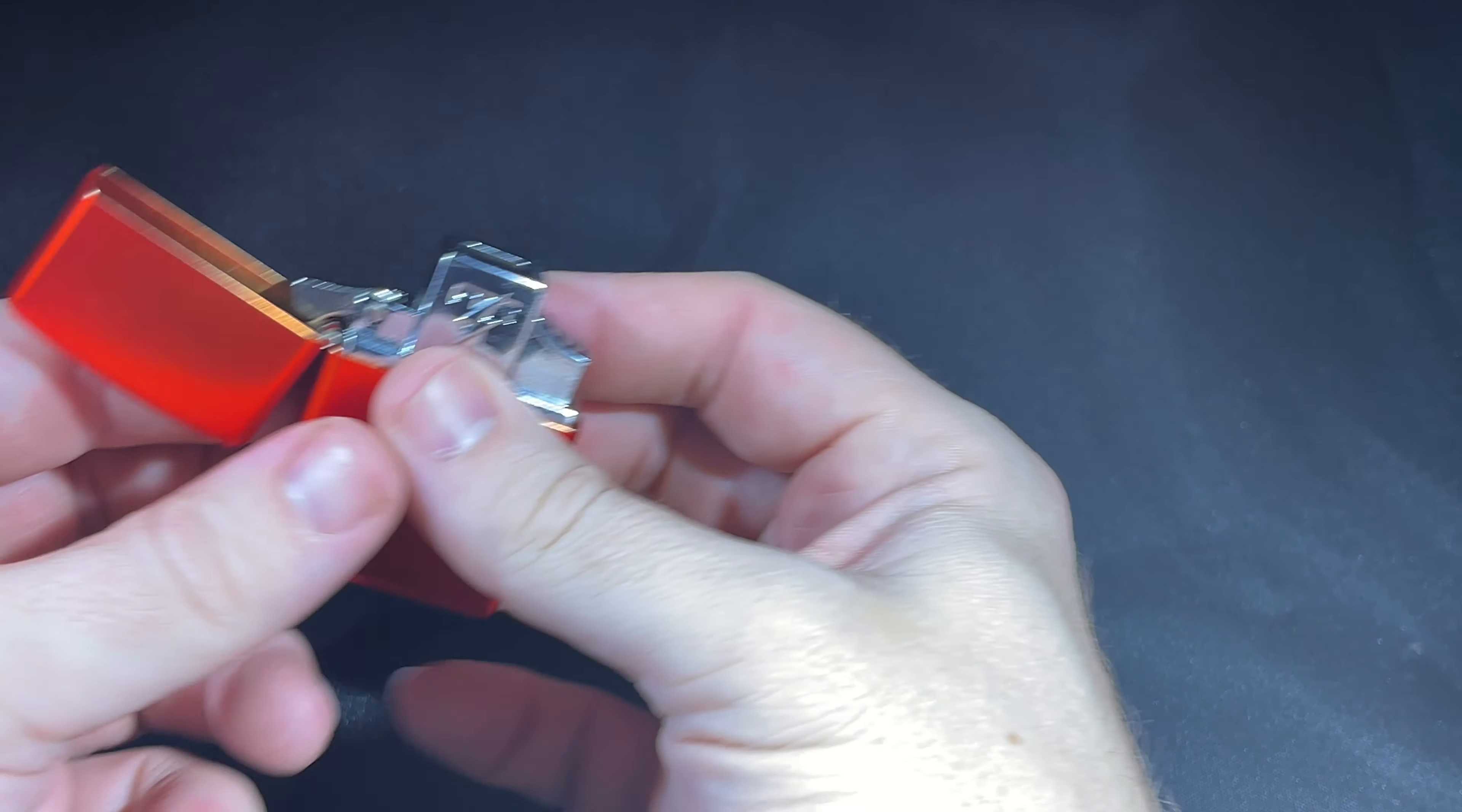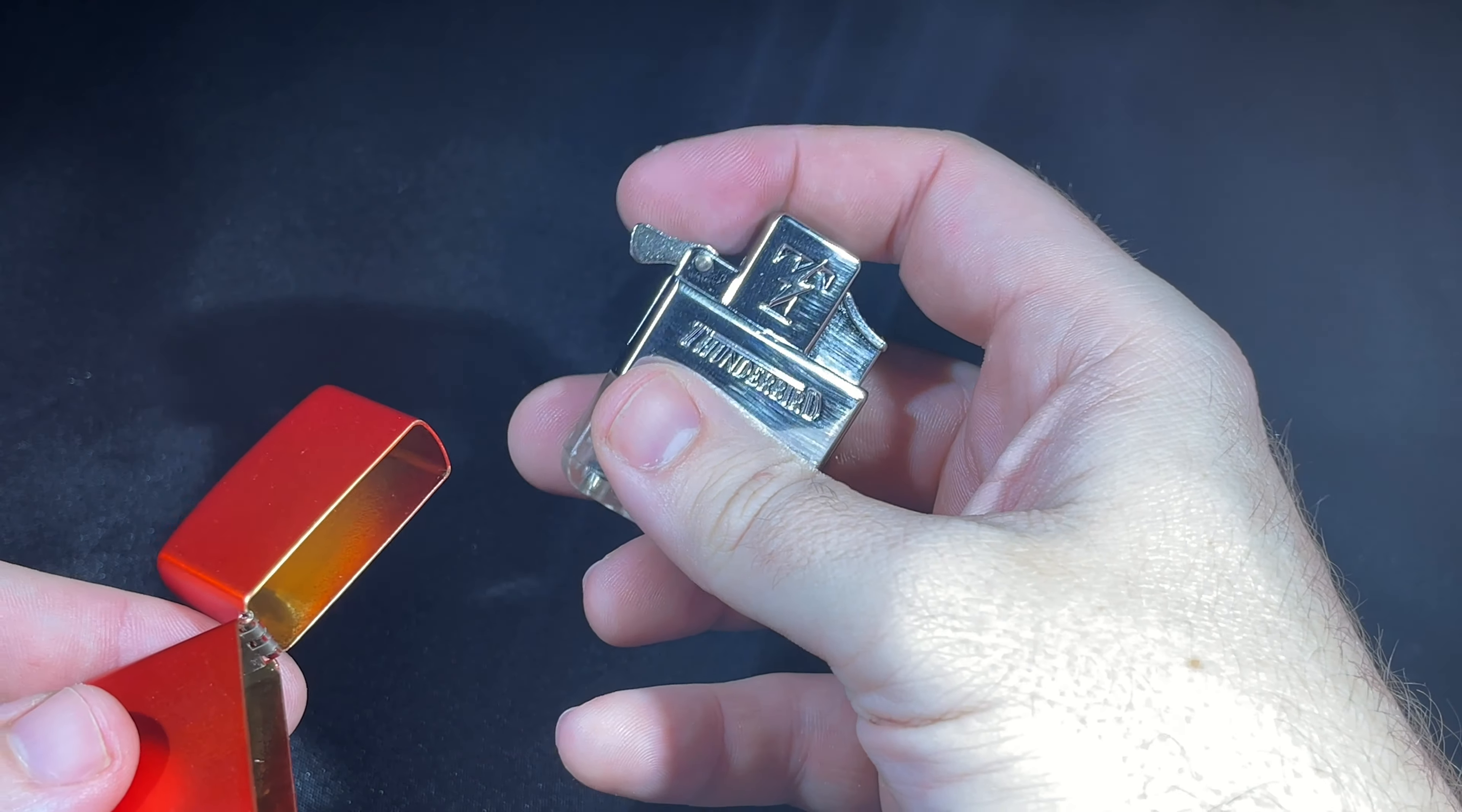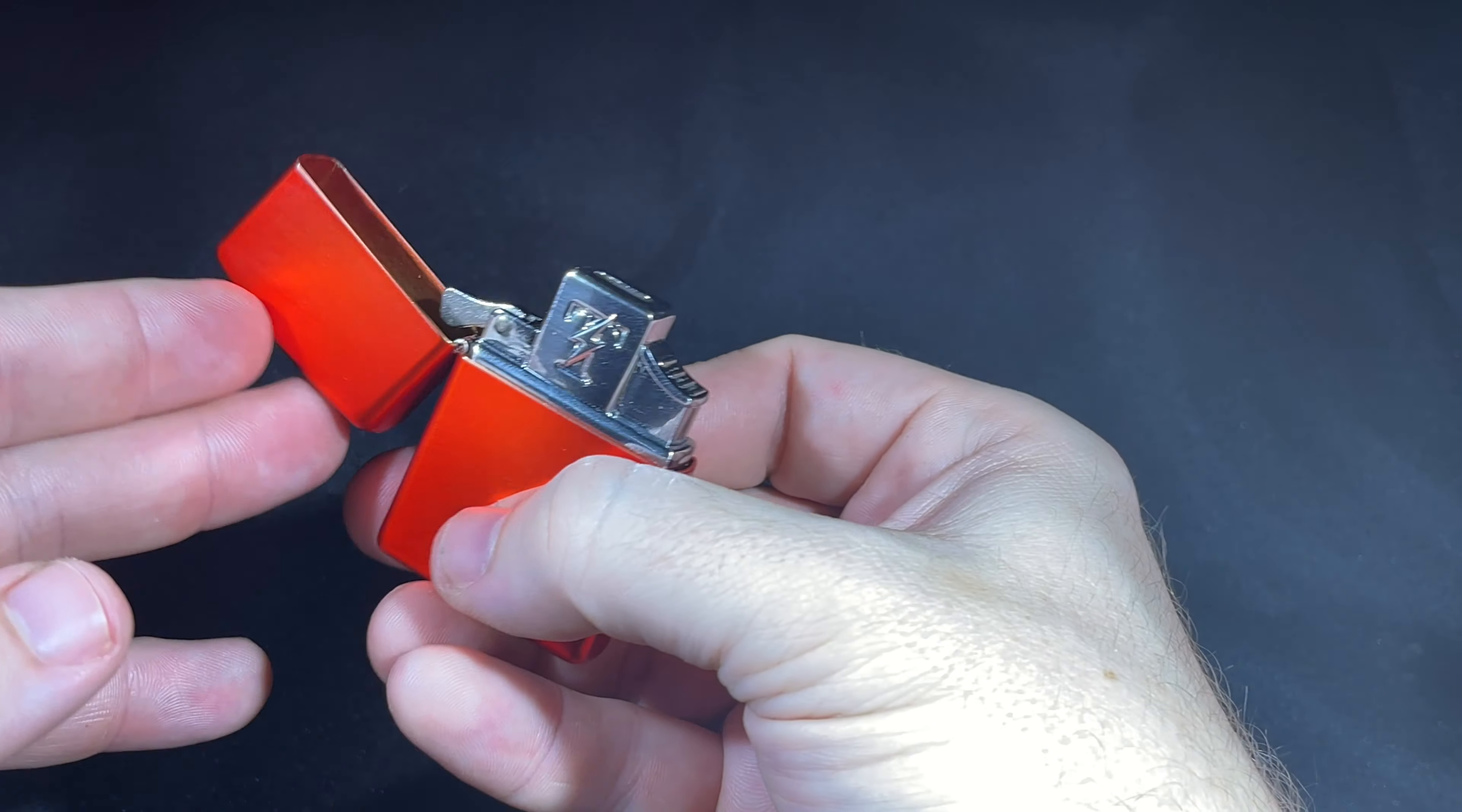Now to do that, all you have to do is slide out the original insert, which is not this obviously, and then replace it with whatever one you have that uses butane. The only real trick to it is you want to make sure this little lever is flipped down. That allows it to engage with the lid so that it will close nice and easy and just like that you have a cigar-friendly torch lighter in a Zippo body.